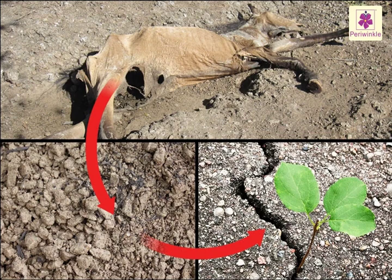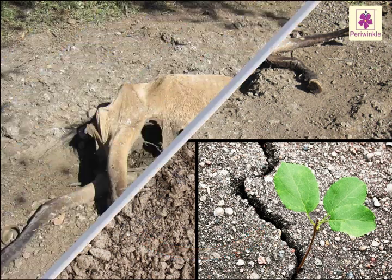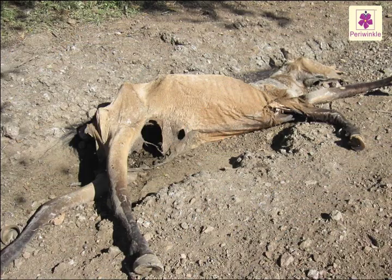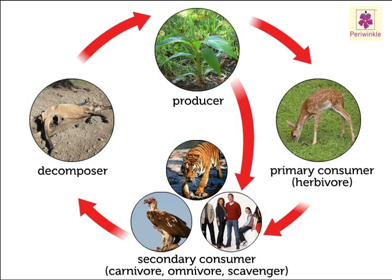The green plants absorb these substances along with water from the soil and grow. Decomposers are actually recyclers — the non-living substances return to the soil, water, and air for use again. This is how the cycle is completed.